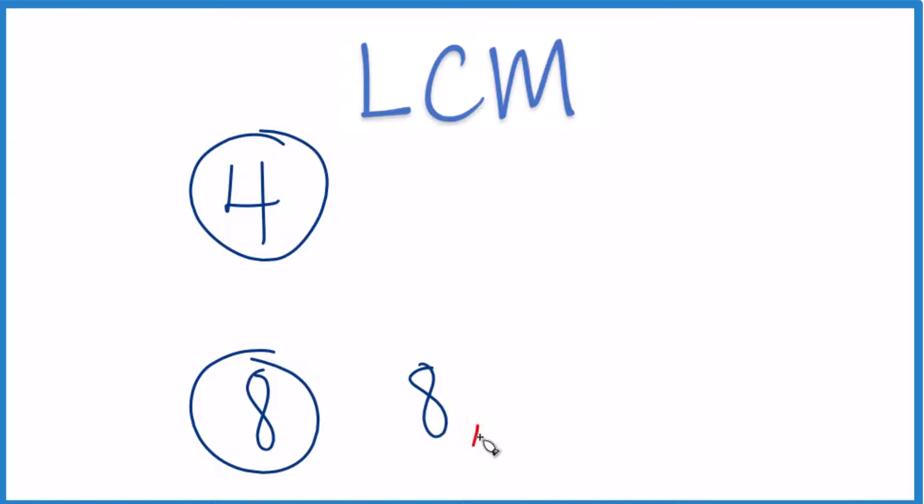So we could say 8, 16, 24, but I can already see that 8, 4 goes into 8 evenly. So if we write the factors for 4, 4, 4 plus 4 is 8, and there it is.